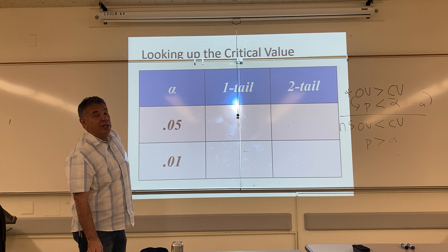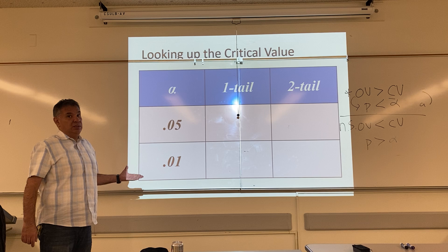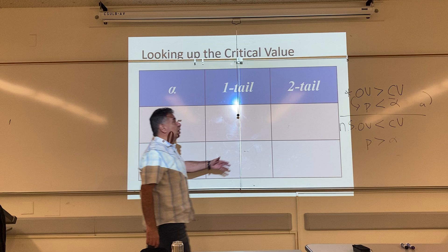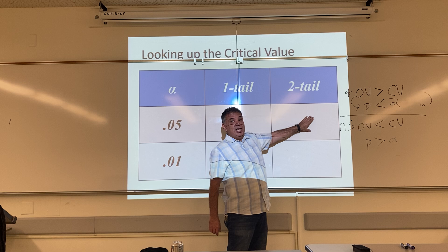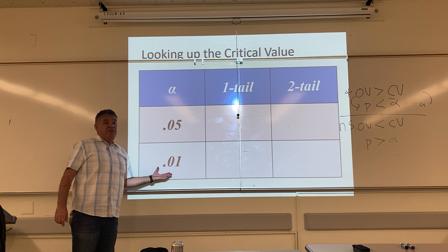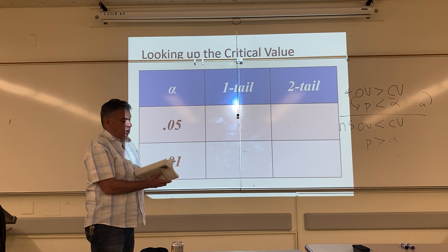We want to fill out this table here for practice. When you do this for real, you only look up one critical value. If we were looking for any difference, that would be a non-directional research hypothesis, which would require a two-tailed test. And if we were doing this for real, we would be using an alpha at 5%. This would be our starting guideline. We can always make alpha smaller, but we can never make it bigger.